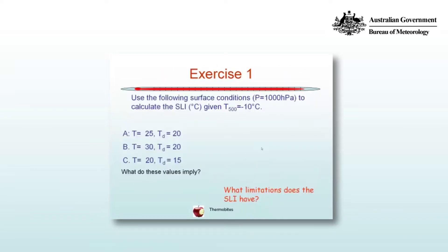Use the following surface conditions for a surface pressure of 1000hPa to calculate the SLI in degrees Celsius, given an environmental temperature at 500hPa of minus 10 degrees Celsius. Stop the video and calculate these values.